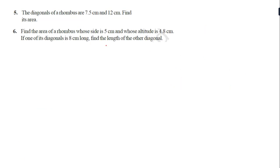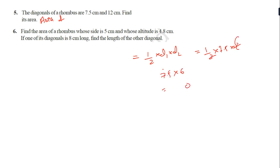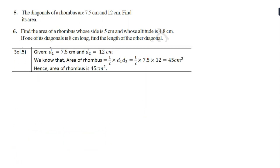Questions 5 and 6 are easy because we have already discussed the diagonal formula for a rhombus. Area of rhombus equals 1 by 2 into D1 multiplied by D2. So 1 by 2 into 7.5 into 12. Cancelling 12 by 2 gives 6. So 7.5 into 6 equals 45 centimeter square. That is the correct answer.